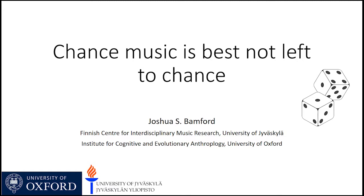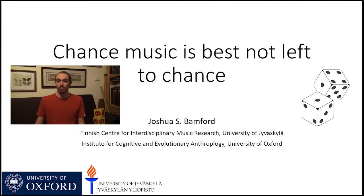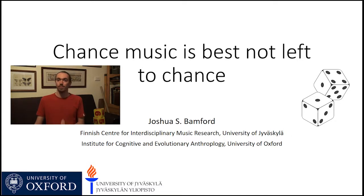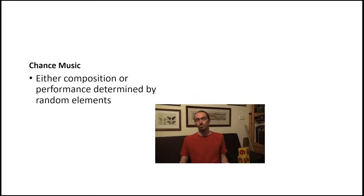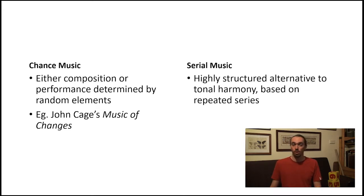For those not aware, chance music is a method of musical composition which is supposed to be entirely random. It can be either a predetermined score generated through a random process, or it could have indeterminate elements in the composition such that the composer doesn't have complete control over how it's realised — meaning part of it is improvised by the performer. In this case I'm mostly interested in the predetermined score generated by chance; examples of this would be John Cage's Music of Changes. On the converse, we have serial music, which is a highly structured method of musical composition — for example, Schoenberg's 12-tone row system.